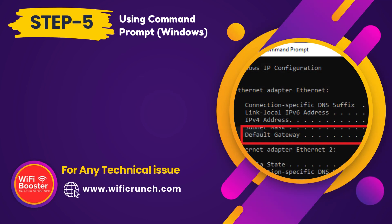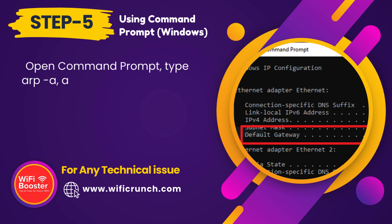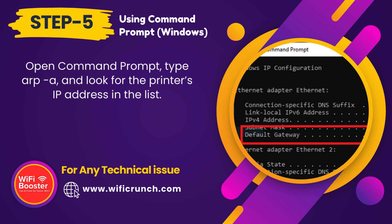Step 5. Using command prompt on Windows, open command prompt, type arp -a, and look for the printer's IP address in the list.